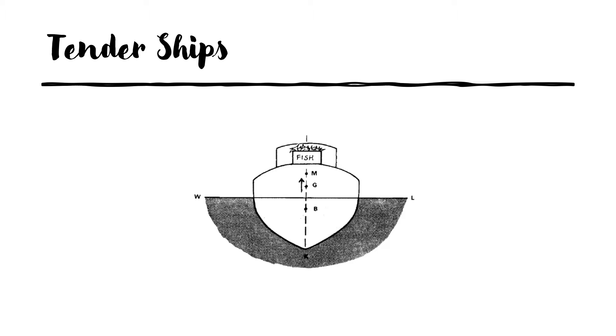The horizontal line WL stands for water line. The letter B stands for center of buoyancy. The letter M stands for metacenter and at the bottom of the vessel you have the letter K which stands for the vessel's keel.